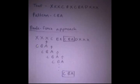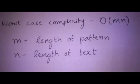So the number of comparisons we would be making in the worst case would be m cross n, where m is the length of the pattern and n is the length of the text.